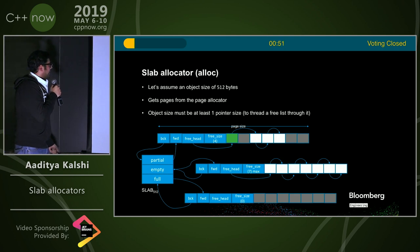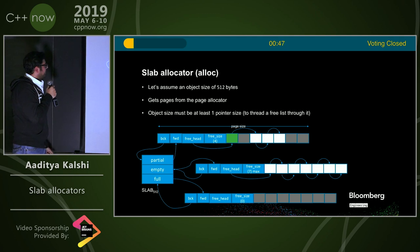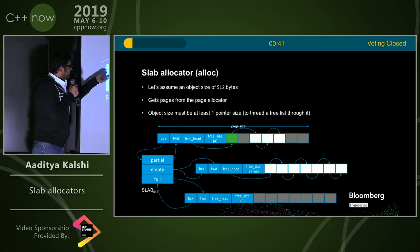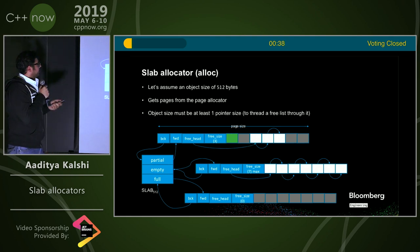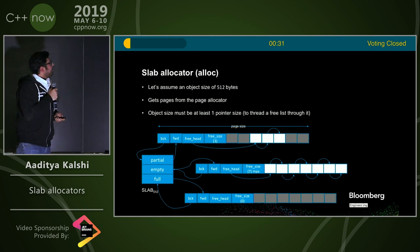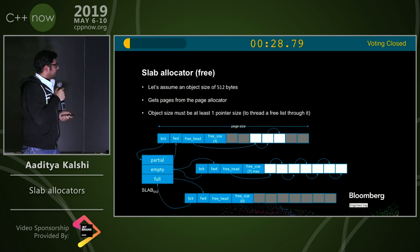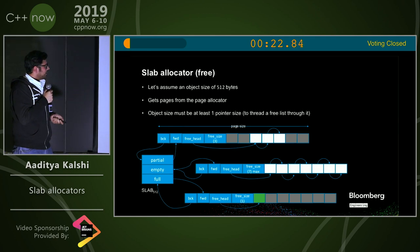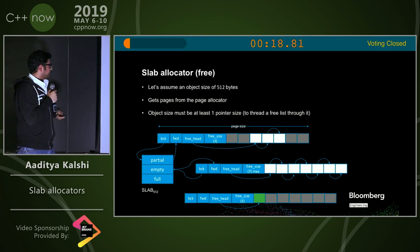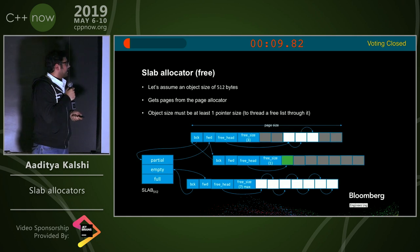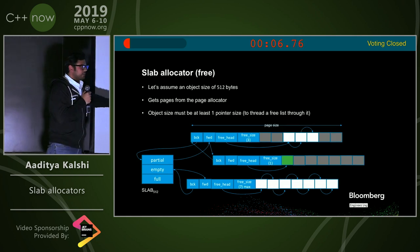An allocation typically goes like this: you get a request, you know the size is 512, you go to the partial list and find the first slab page that has something free — by definition, something in the partial list will be free. You update the free list and return the piece of memory. Freeing is similar: let's say we free a piece of memory in a completely full slab page. We attach it to the free list and update the size, but since it's no longer full, it transitions to the partial list. Typically you add it at the end of the doubly linked list so you don't end up thrashing from partial to full over and over again.